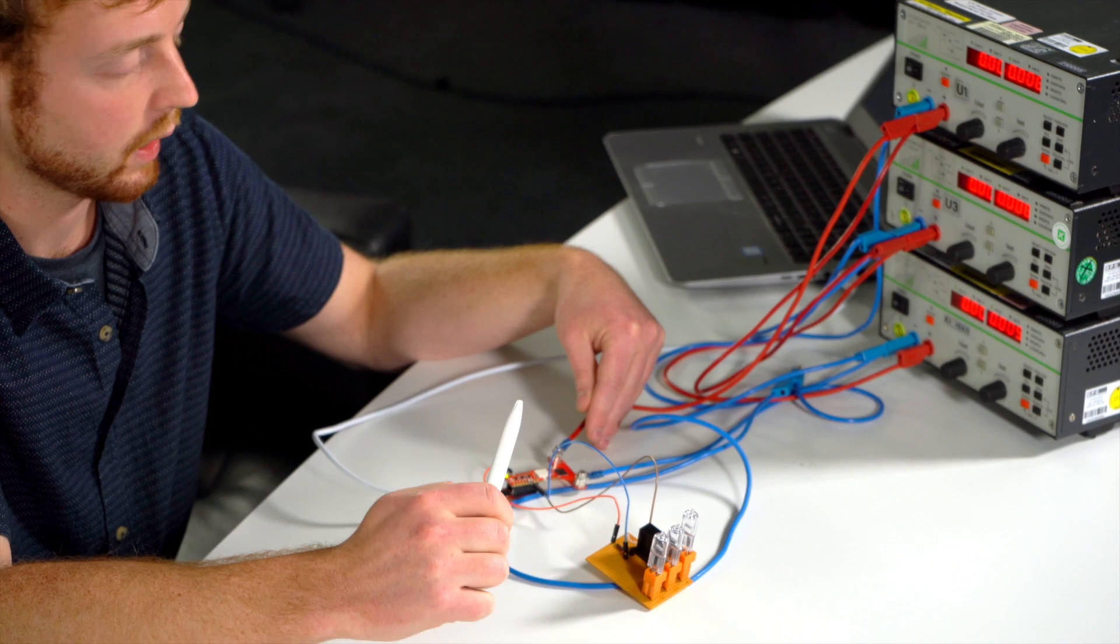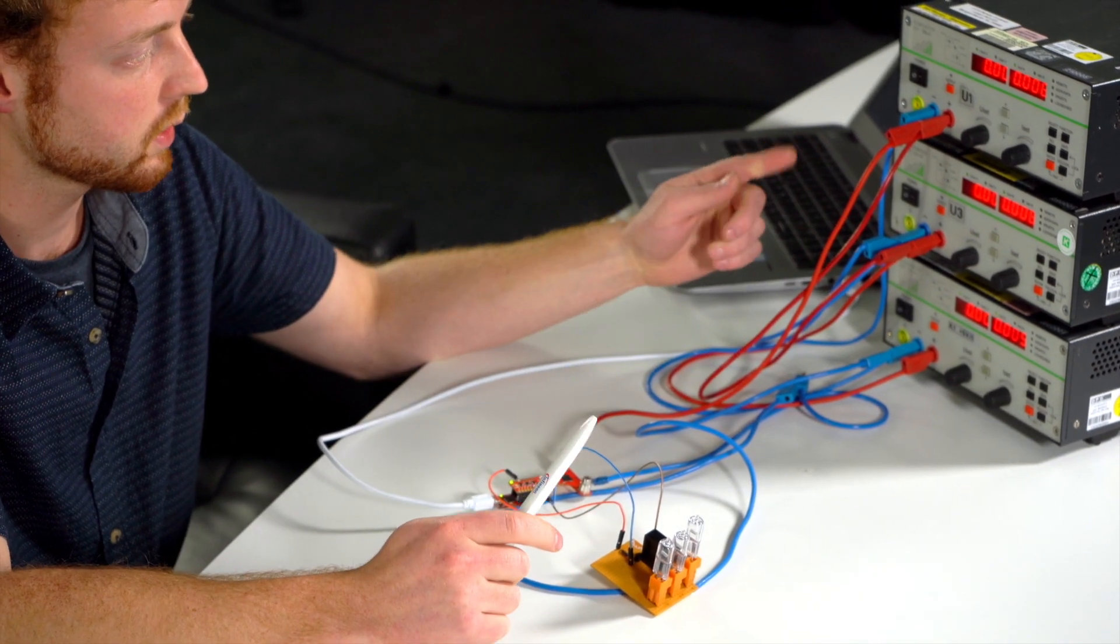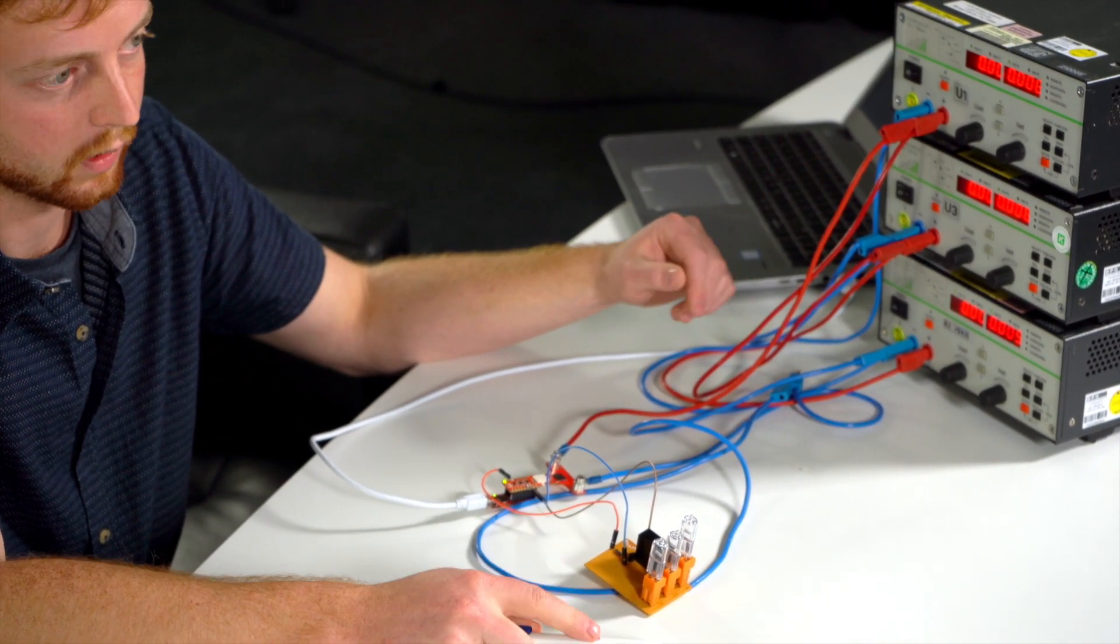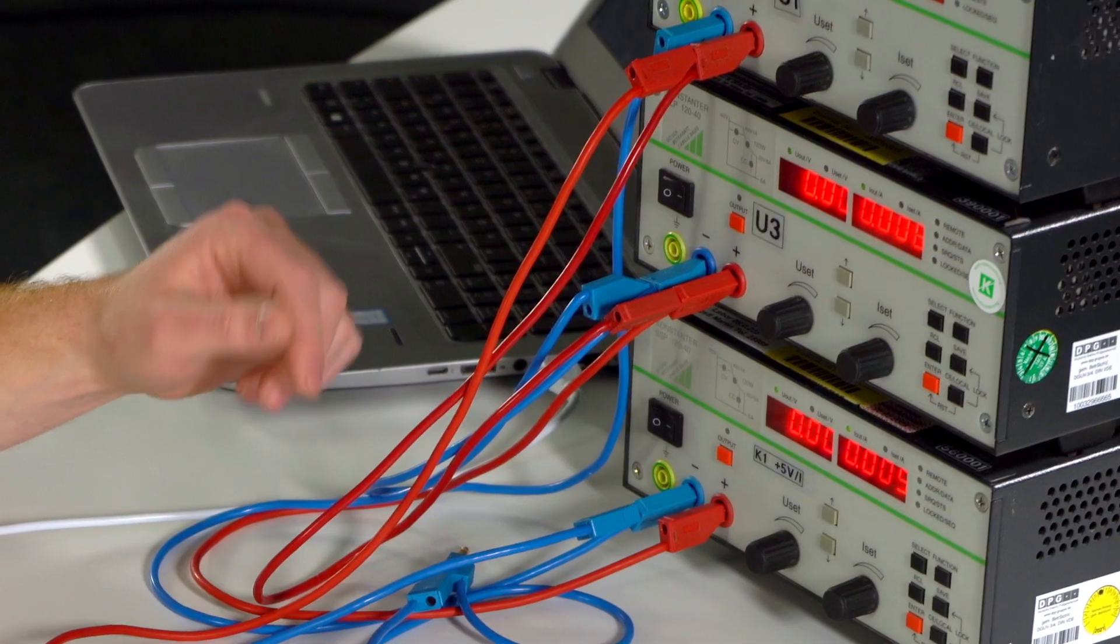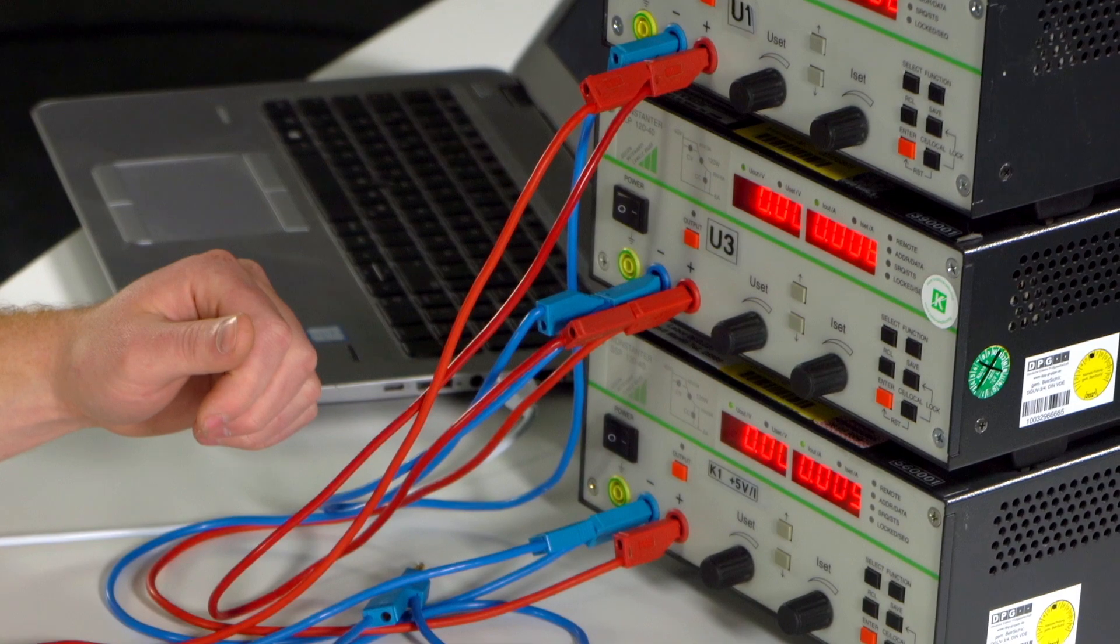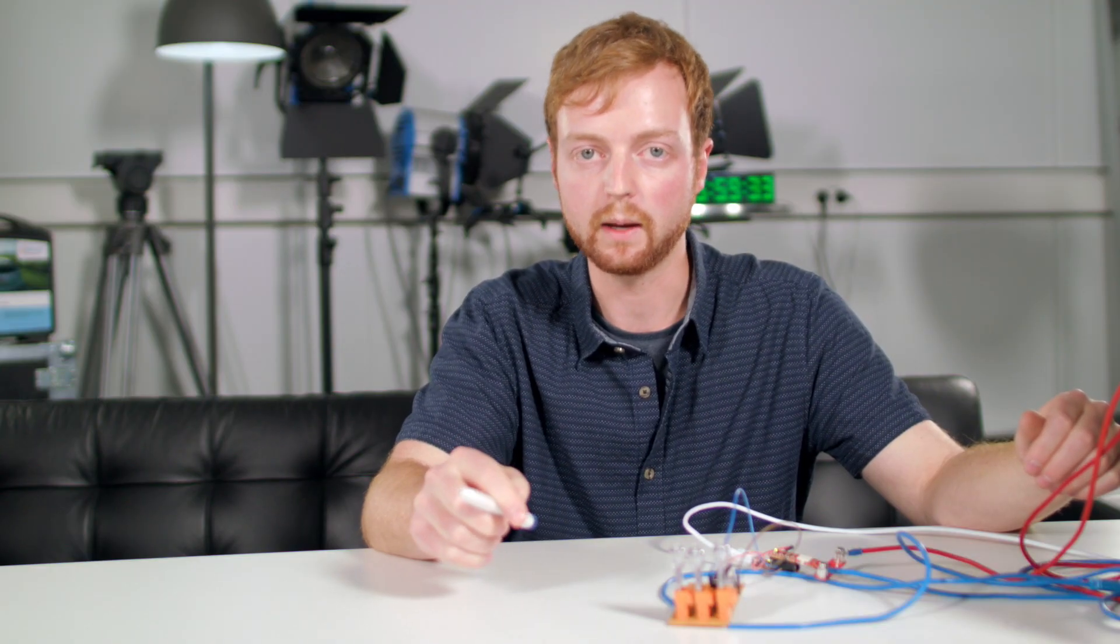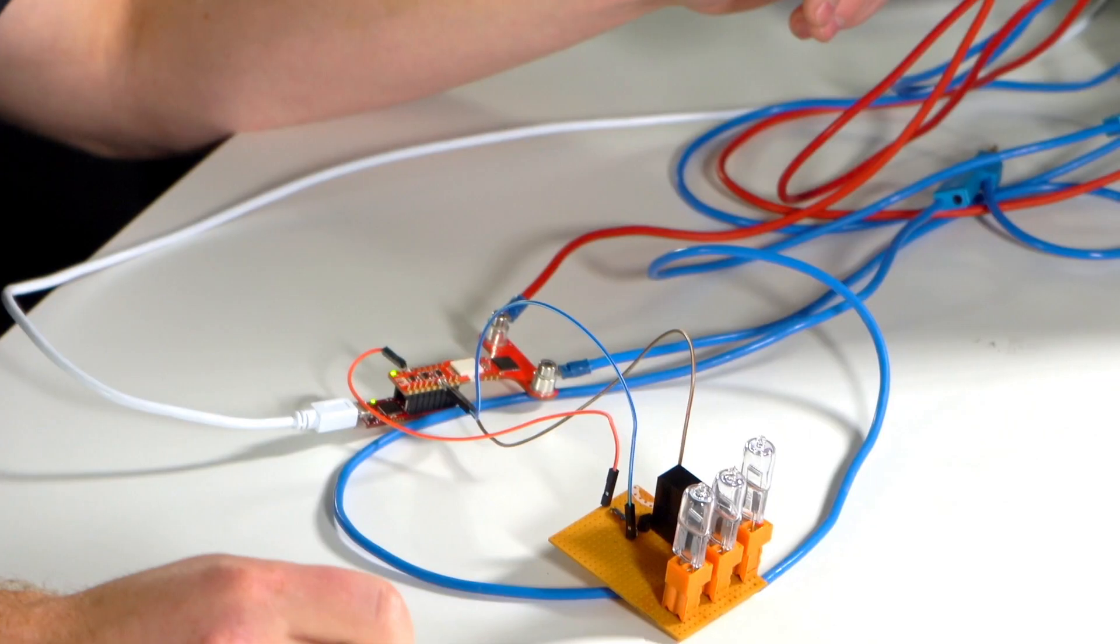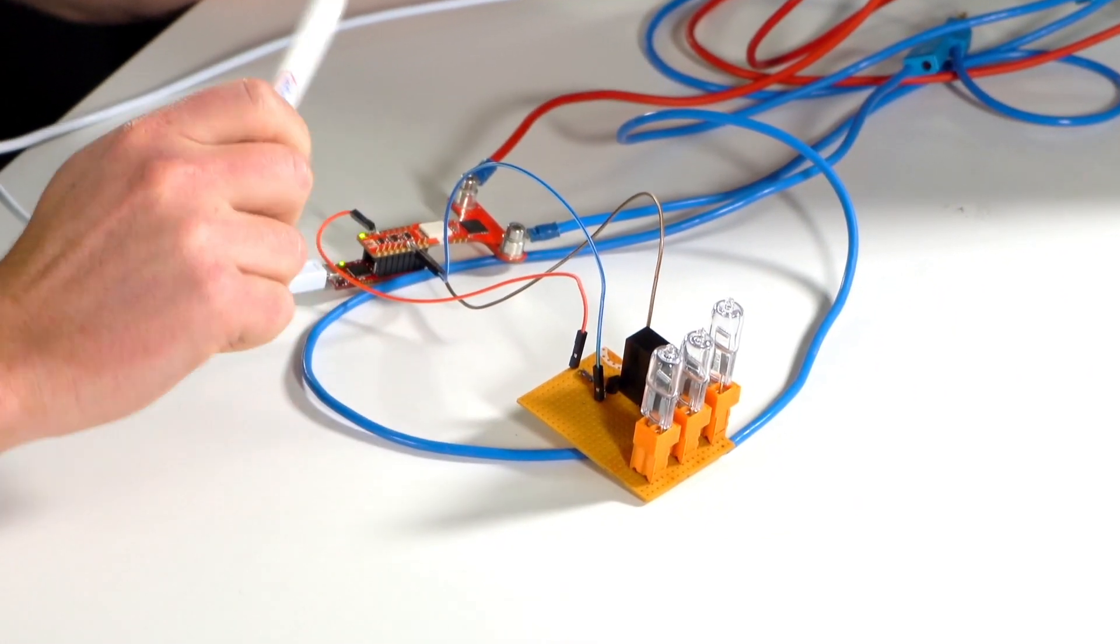So when I switch on the first two there will happen nothing, but with the third power supply the current will increase over the limit, over the 15 amps, and therefore the overcurrent signal will be triggered.